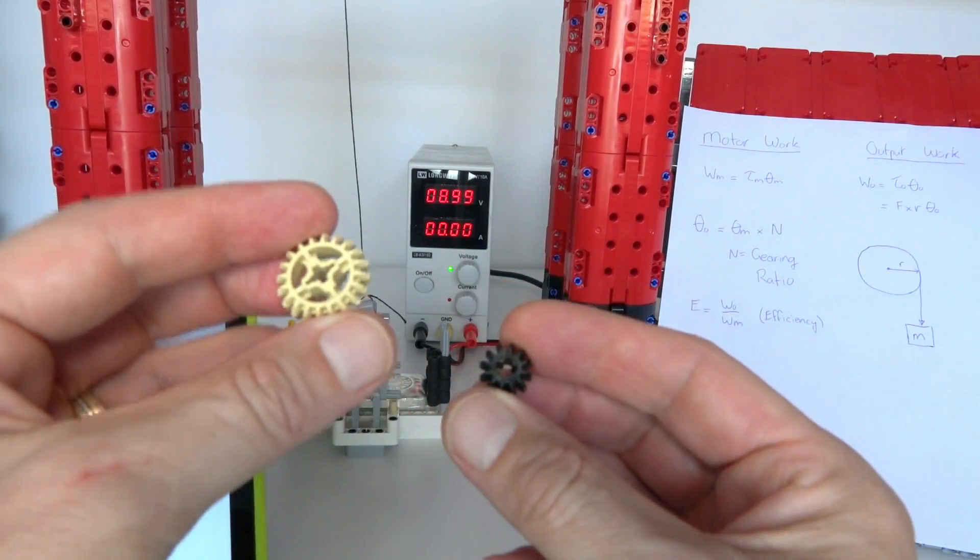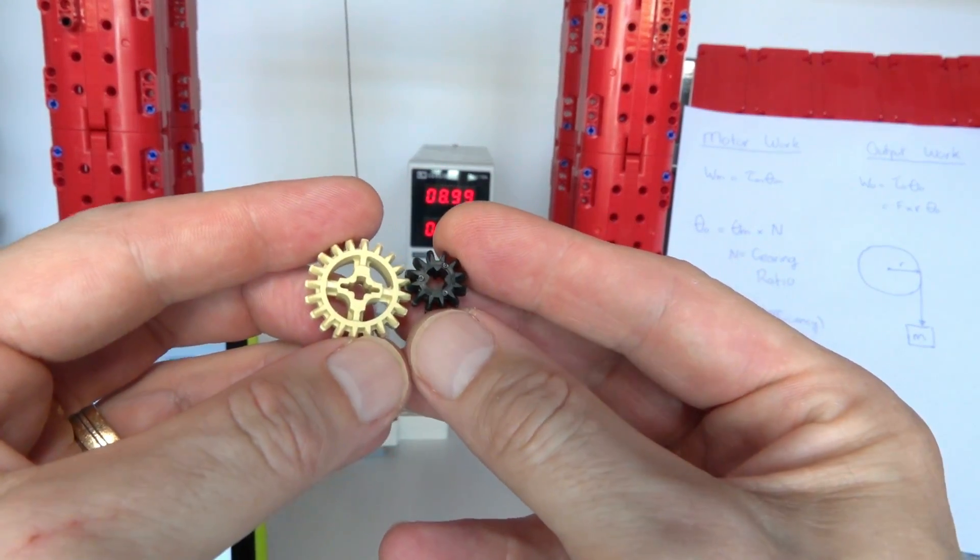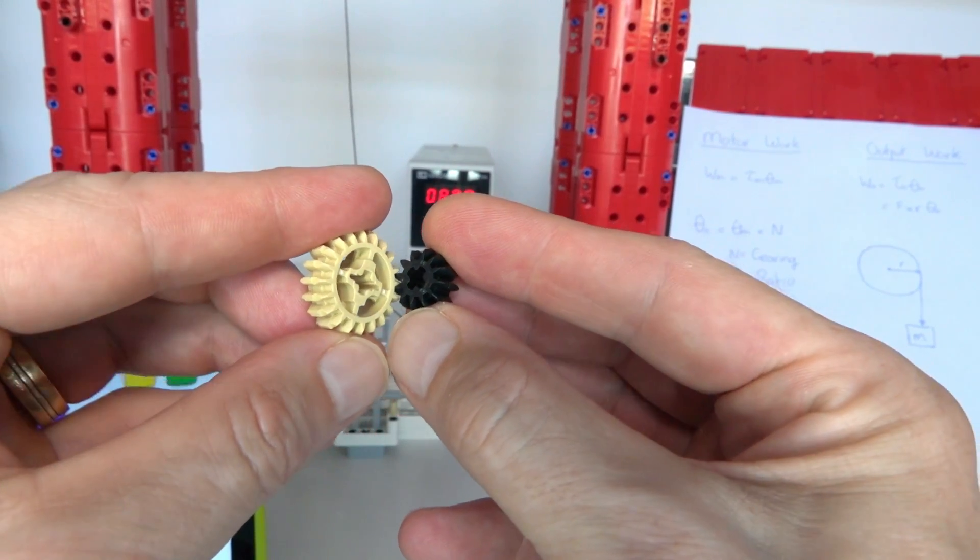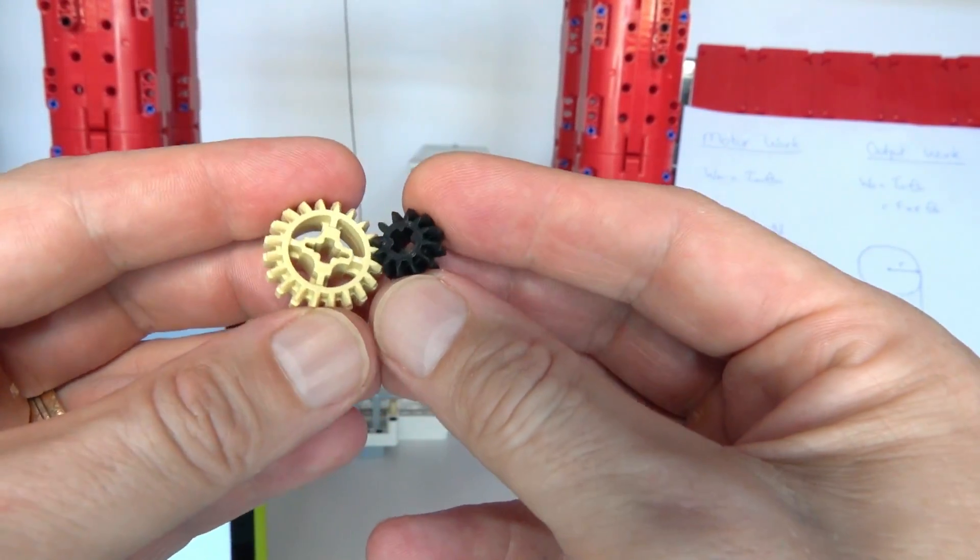So we've got the original 20 tooth and the original 12 tooth gear, and of course these are bevel gears. The advantage of bevel gears is that you can either mesh them at 180 degrees or 90 or some angle in between and they can still mesh and drive each other.